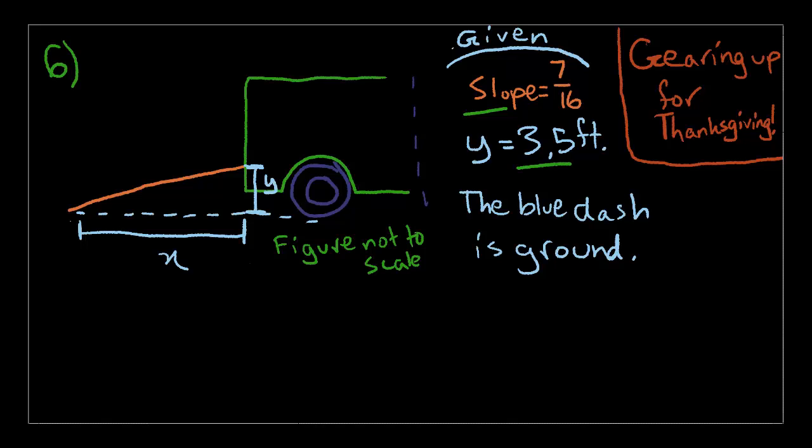The ramp has a slope of 7/16, and y is 3.5 feet. So, what is x? To figure this out, we're going to use proportions. Since the slope of the orange line is 7/16, you can make this 7/16 equals 3.5, the y value, over x. Setting up this proportion, you'll notice that 3.5 is just half of 7. So we know that x is also going to be half of 16, which is 8, and that's answer A.